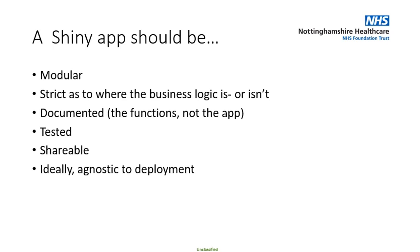The Shiny app should also be documented — in terms of functions, not the app itself, since apps are pretty much self-explanatory and interactive. When your business logic is nicely structured as a family of functions, you can also very nicely document it. You can test those functions using something like testthat, and it's much easier to debug — because when an error occurs, you know what function is responsible and you can go back and fix it.